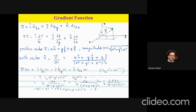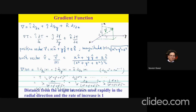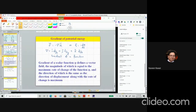So if you take the gradient of |r|, you get the unit vector r-hat as the solution. This means the distance from the origin increases most rapidly in the radial direction, and the rate of that increase is one.